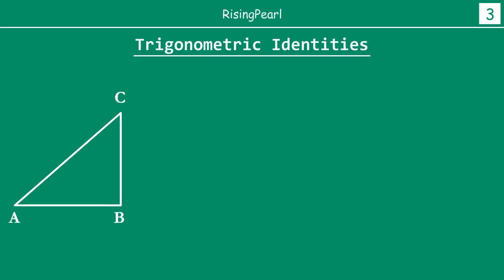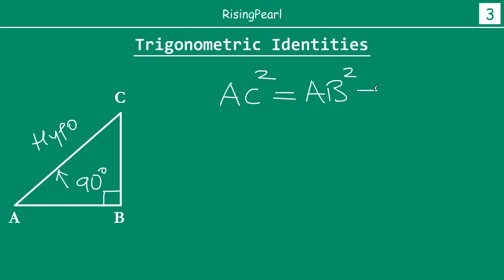We need to take some concrete examples to understand this. An identity means an equation is true for all values of the variable. In the context of trigonometric identity, it is an equation that involves trigonometric ratios of one angle, and that relationship among trigonometric ratios is true for all values of that angle. So let's take a look concretely. We have a right angle triangle where angle B is 90 degrees. The side opposite to 90 degrees is the hypotenuse. From Pythagoras theorem, AC² = AB² + BC², since AC is the hypotenuse and AB and BC are the other two sides.